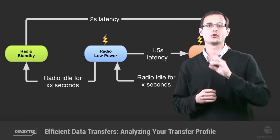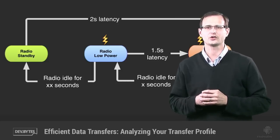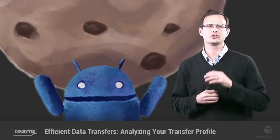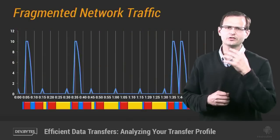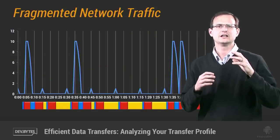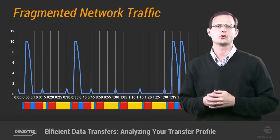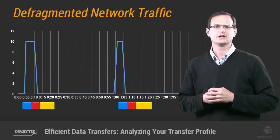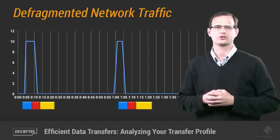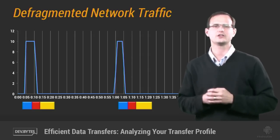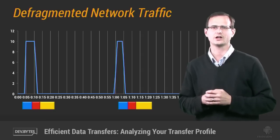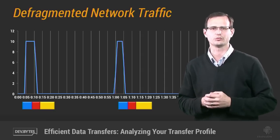As you may have already seen in my DevByte on understanding the cell radio, it's good practice to use the big cookie approach to data transfers to avoid a fragmented network traffic profile that keeps the cell radio powered up indefinitely, in favor of minimizing the number of radio state transitions. And before you optimize your code, you need a way to generate these graphs that show exactly when your app is transferring data and to understand what you're looking for so you can look for areas that need improvement.